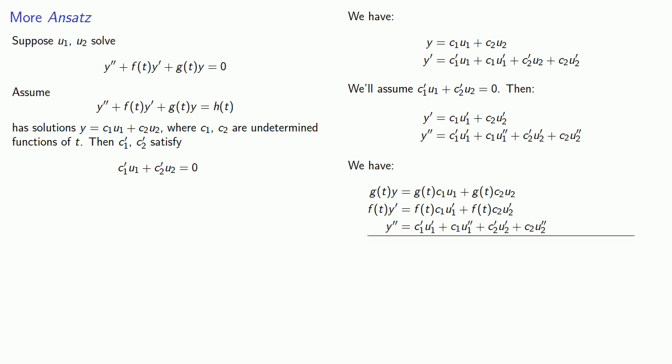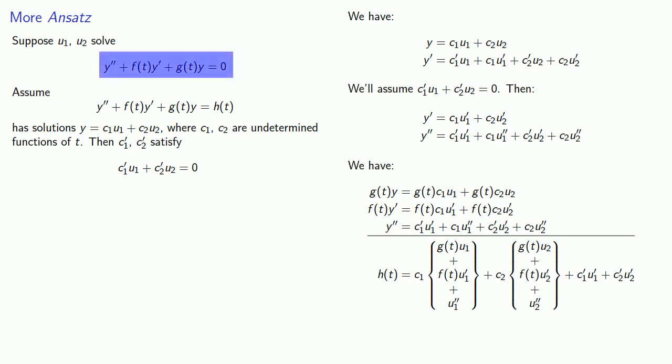Adding up the left hand side should give us h of t. Since u1 and u2 solve the original homogeneous differential equation, this coefficient of c1 and this coefficient of c2 are both going to be zero. And so our equation simplifies.